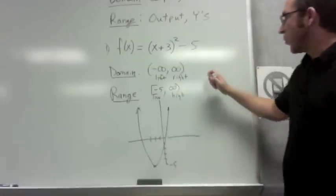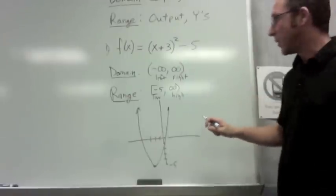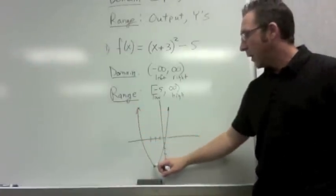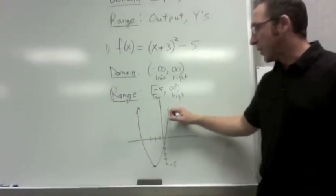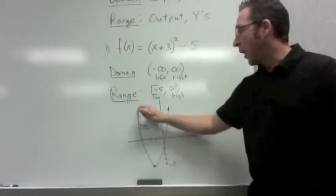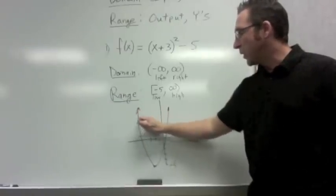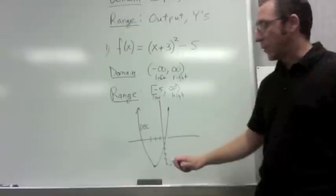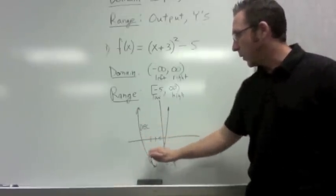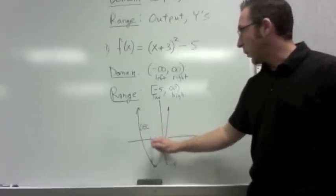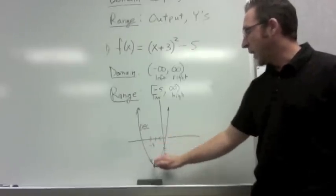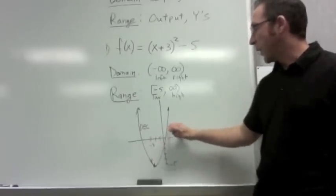I can sneak in a little extra training here on increasing and decreasing as well. This part of the graph is decreasing. This part of the graph is increasing. Now even though there's an arrowhead pointing up, we always read the slope or the nature of the graphs increasing or decreasing from left to right. So really this graph is falling until it gets to x equals negative 3. And then once it hits x equals negative 3, it rises for the rest of it.